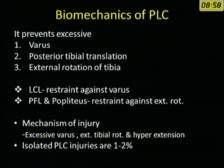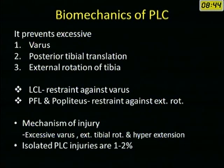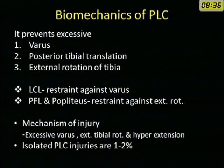The posterolateral corner prevents excessive varus, posterior tibial translation, and external rotation of the tibia. The lateral collateral ligament is the primary restraint against varus, whereas the popliteus tendon and the popliteofibular ligament are restraints against external rotation. The mechanism of injury is excessive varus, external tibial rotation, and hyperextension. Isolated posterolateral corner injuries are rare and are mostly in combination with PCL or ACL.